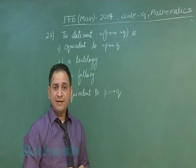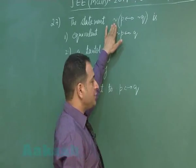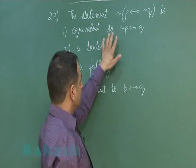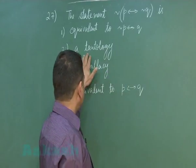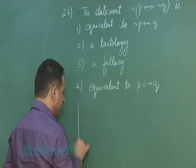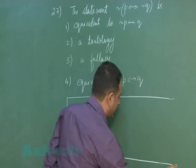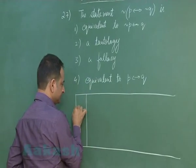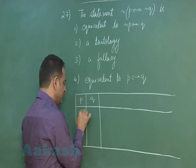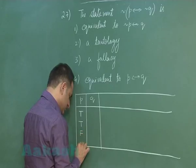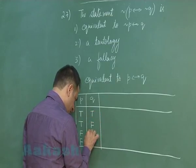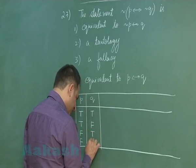Moving to problem number 27, which is related to mathematical reasoning. The statement is: negation of (p if and only if not q) — that is, negation of q — is equivalent to: negation of p if and only if q, a tautology, a fallacy, or p if and only if q. We have to form a truth table. We will have columns for p and q with possibilities: true/true, true/false, false/true, false/false.